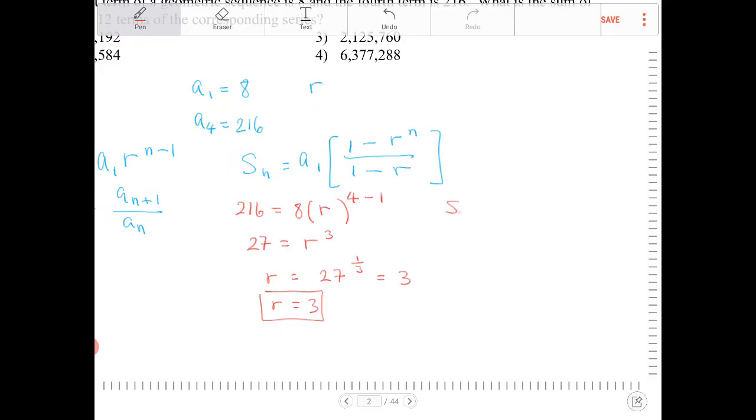so S sub N, or S sub 12, is equal to 8, because that's A1, times 1 minus 3 to the 12th, over 1 minus 3.